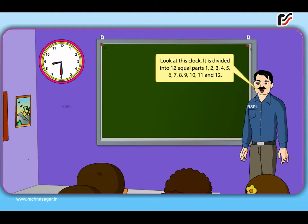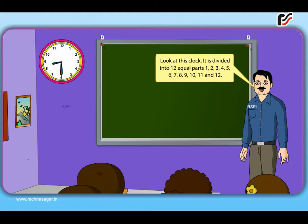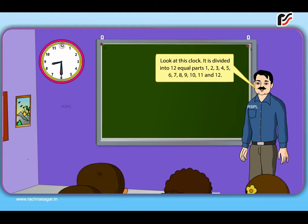Look at this clock. It is divided into 12 equal parts: 1, 2, 3, 4, 5, 6, 7, 8, 9, 10, 11, and 12.